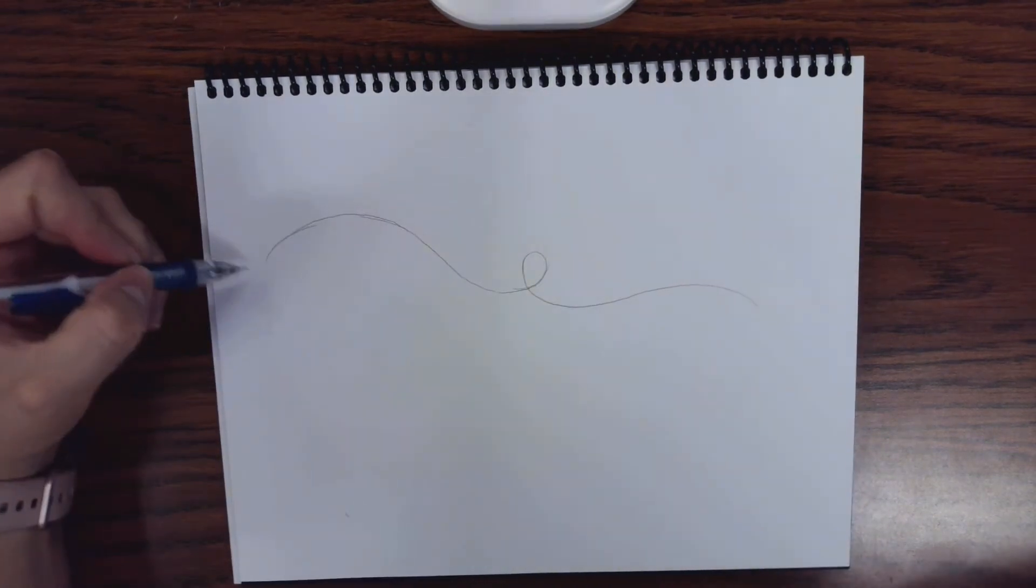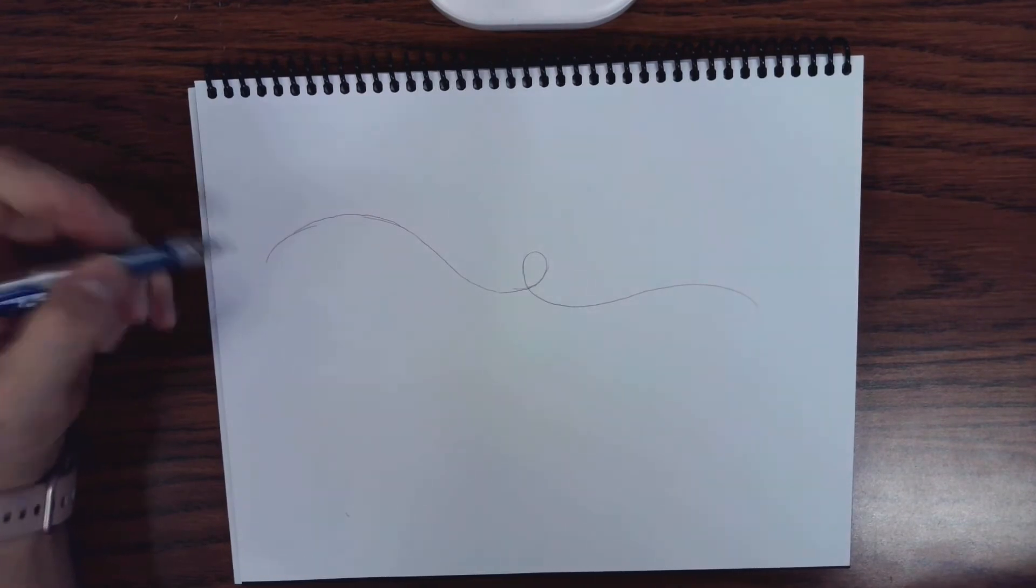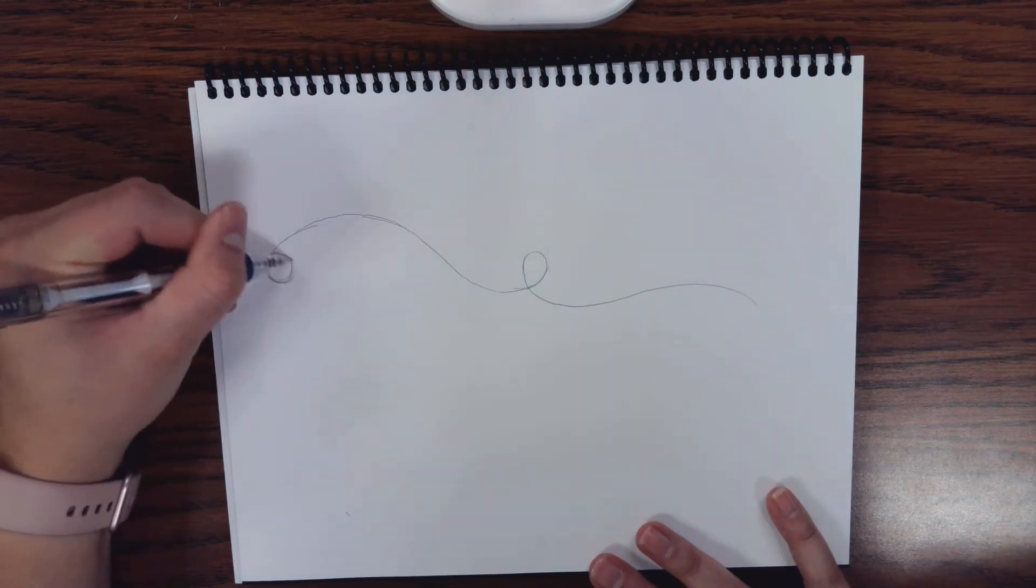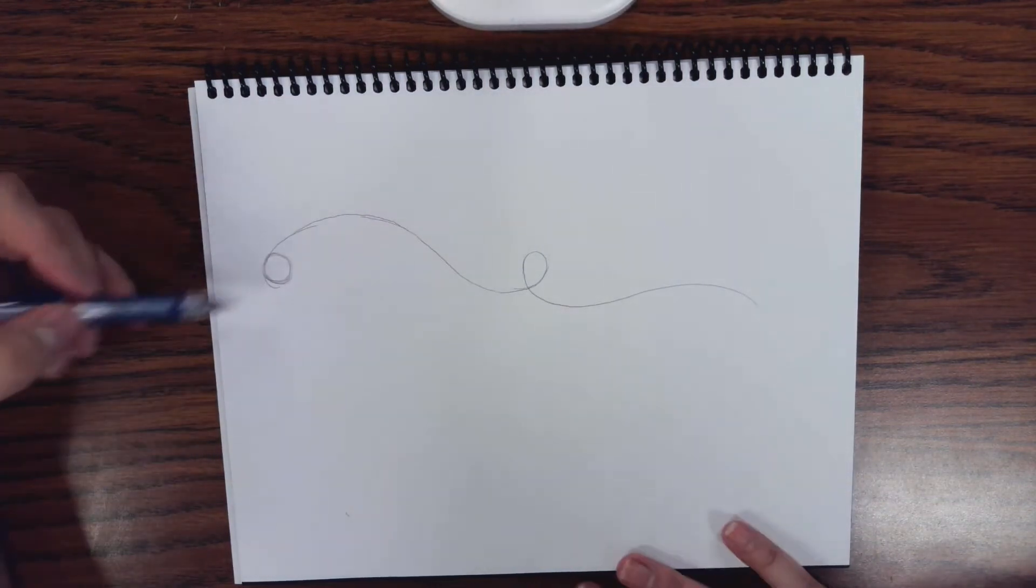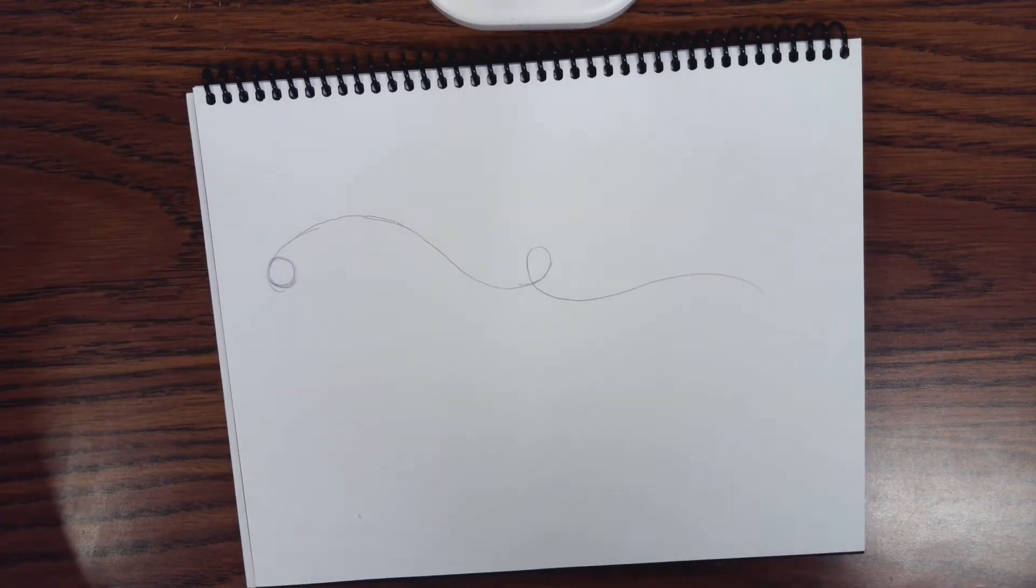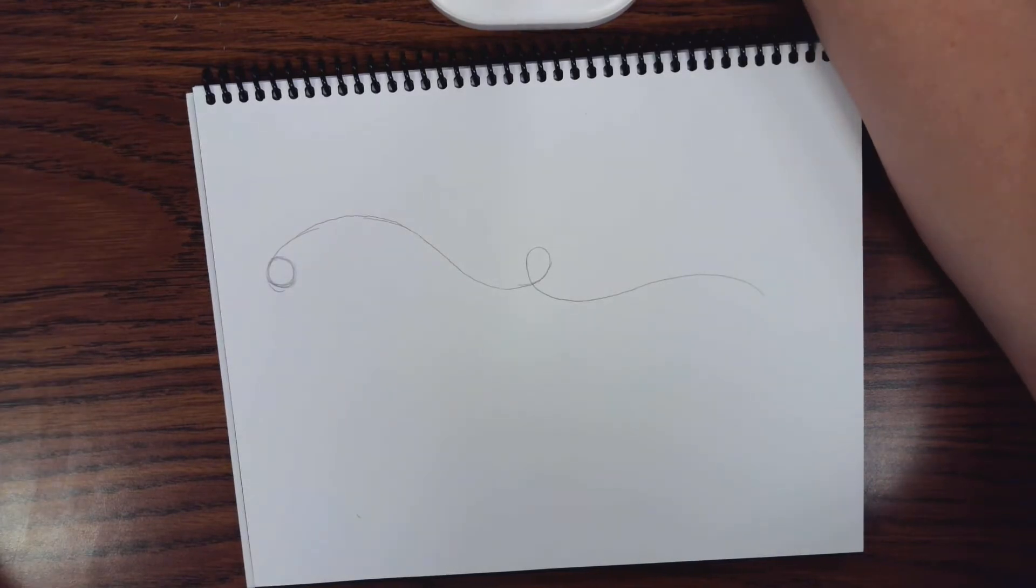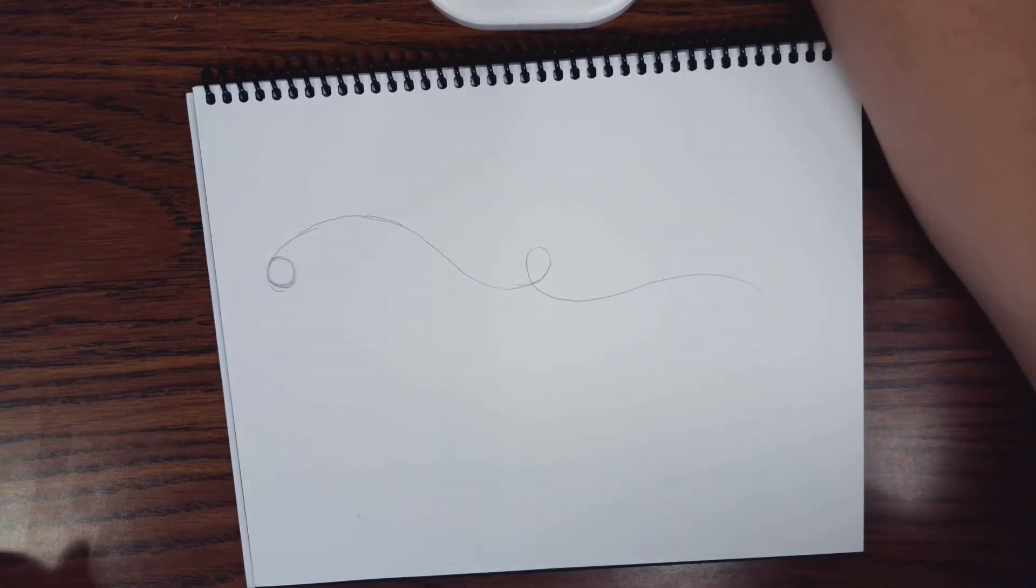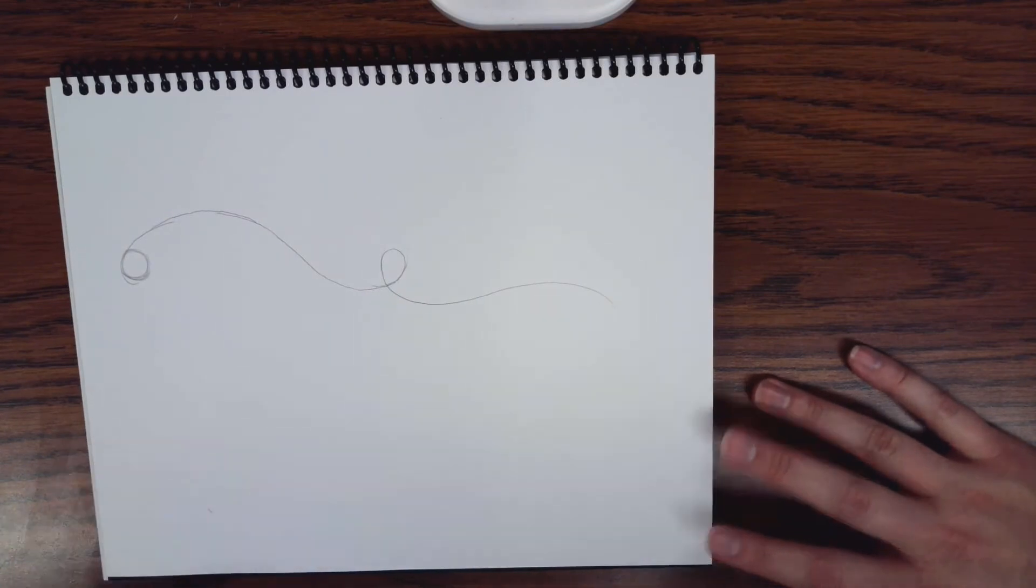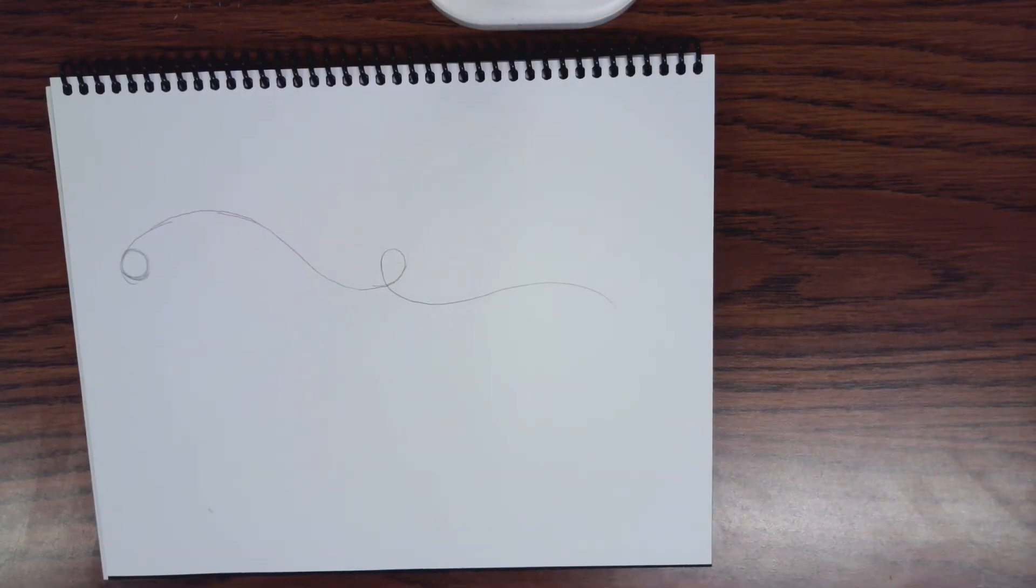Right on the edge of your line, you are going to start with a circle. Now you're going to see me go around a few times until I feel like I like the shape of my circle. I'm going to wait until I feel like we're all on the same page. I just want to make sure you all can see it.